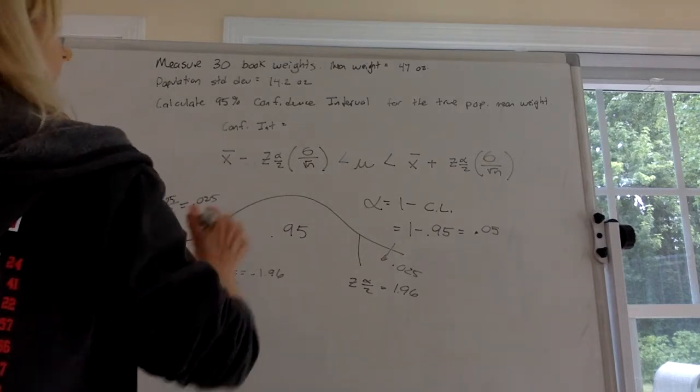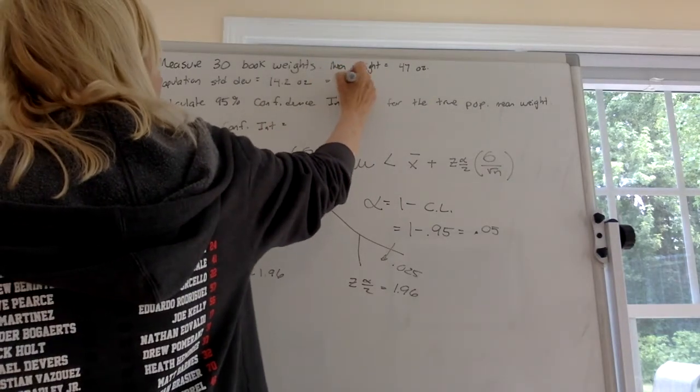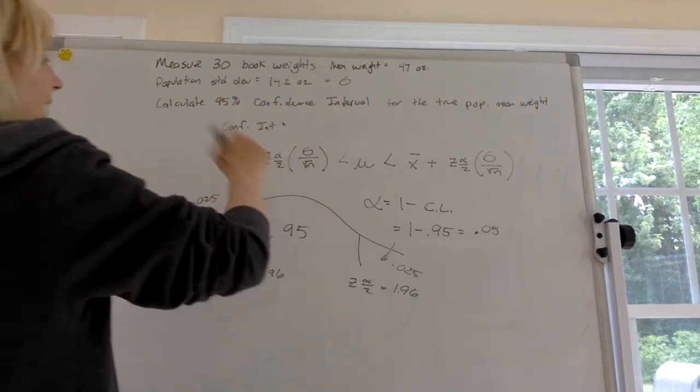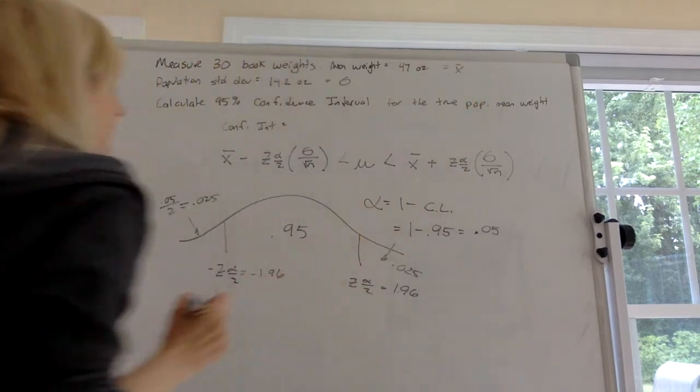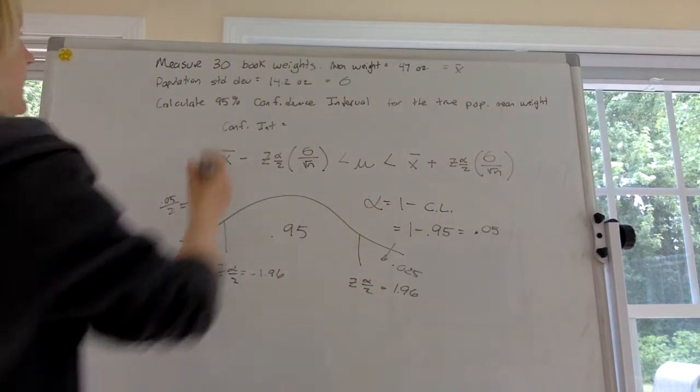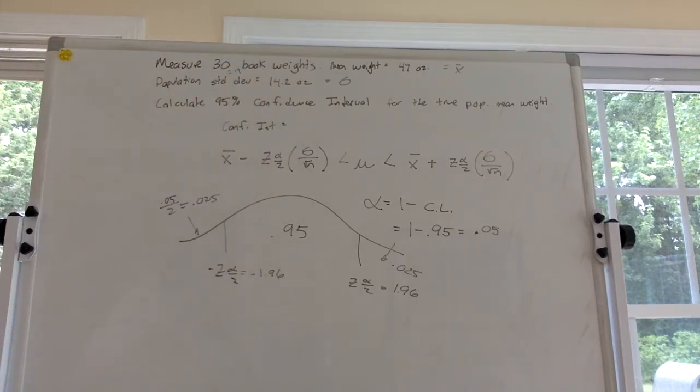I think we have the z alpha over 2. We have the sigma, that's the 4.2. We have the x bar, that's the 47. And we have the n, that's the 30. So I think we can just plug in at this point.